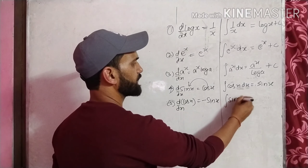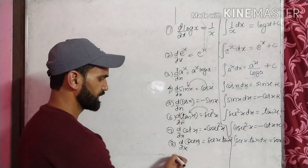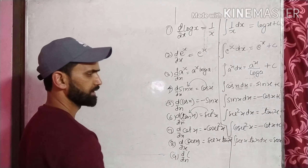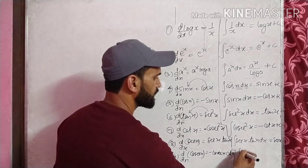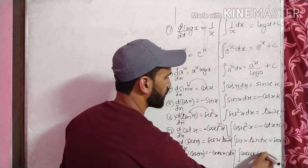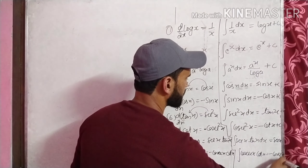Eighth formula: differentiation of secant x is secant x · tangent x, तो secant x और tangent x के product की integration secant x होगी। Ninth formula: differentiation of cosecant x is minus cosecant x · cot x, so integration of cosecant x · cot x will be equals to minus cosecant x plus c.